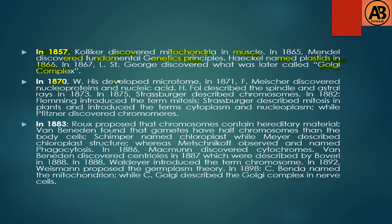W. His developed the microtome in 1870. Miescher discovered nucleoproteins and nucleic acids in 1883. Roux proposed that chromosomes contain hereditary material. Van Beneden found that gametes have half the number of chromosomes compared to body cells.